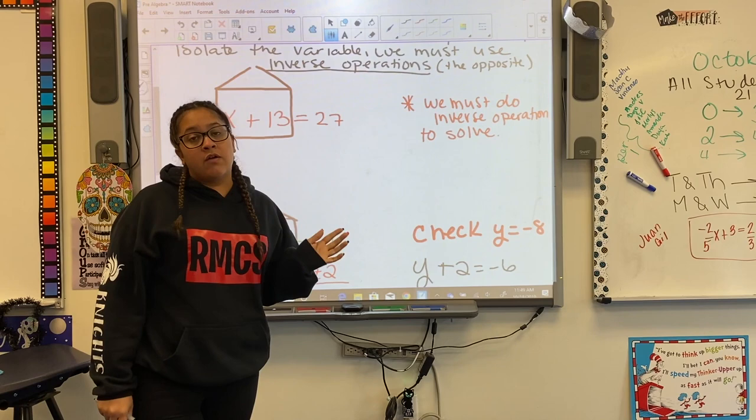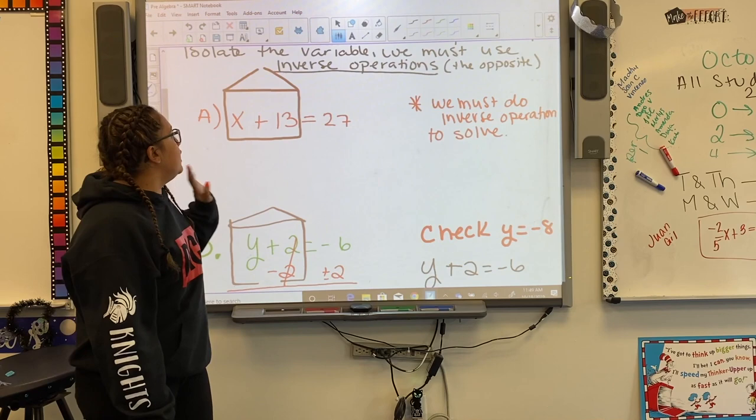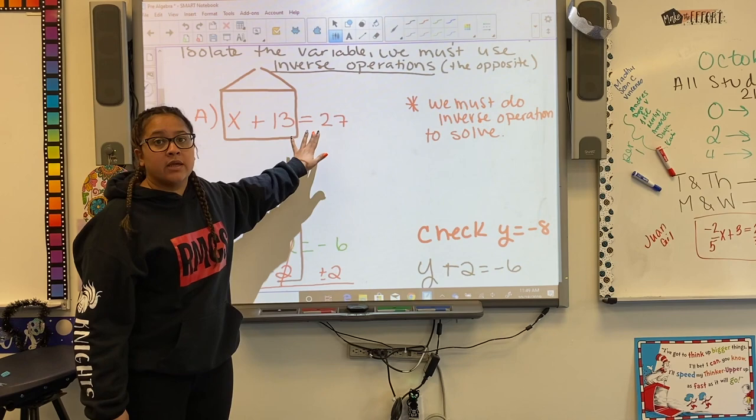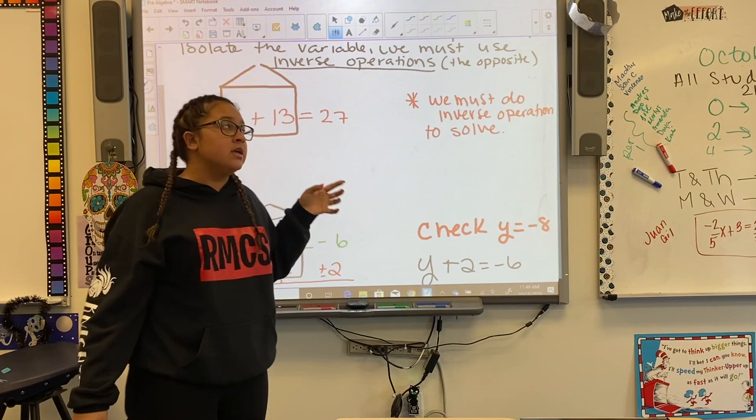So now we're going to look at some examples of one-step equations in order to solve for our variables. When we have an equation — and again, what is an equation? An equation is when we have terms separated by an equal sign. So we have x plus 13 equals 27. That's why this is an equation.